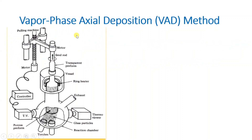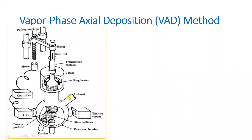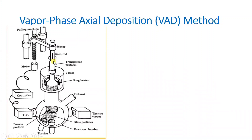Let us understand how the Vapor Phase Axial Deposition method works. You can see the complete structure of VAD: from a torch, glass particles are inserted into a reaction chamber. To analyze the internal process, there is a TV connection as well as a thermo-viewer connection. There is also an exhaust, and the porous preform is inserted as glass particles. It then passes through a ring heater and into a seed rod.